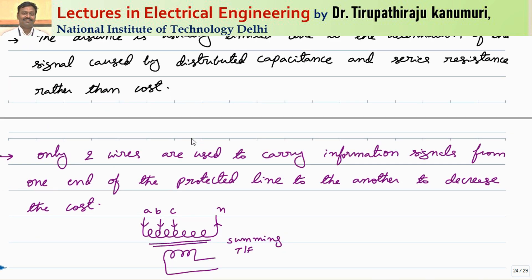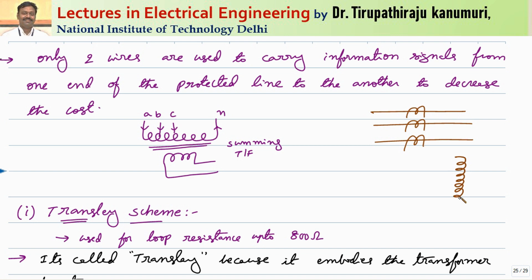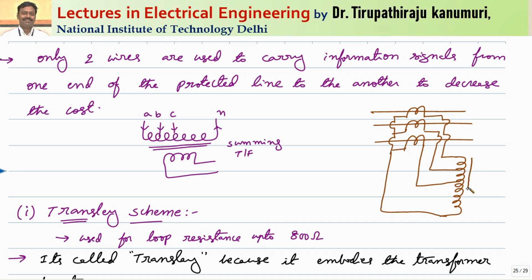The distance is usually limited to between 15 to 30 kilometers due to signal attenuation caused by distributed capacitance and series resistance. To carry complete three-phase information over only two wires, we use a summing transformer. The secondary of the CTs are connected to this transformer. The primary winding is connected so that R, Y, B phase currents are applied, and depending on the net value of current, net flux is produced in the core, which links with the secondary and induces EMF on the secondary side.